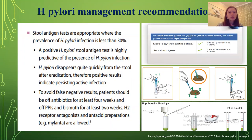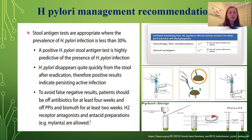Stool antigen tests are appropriate where the prevalence of H. pylori infection is less than 30%. A positive H. pylori stool antigen test is highly predictive of infection. H. pylori disappears quite quickly from the stool after eradication, so positive results indicate persistent active infection. To avoid false negative results, patients should be off antibiotics for at least 4 weeks and off PPIs and bismuth for at least 2 weeks. H2 receptor antagonists and antacid preparations are allowed.